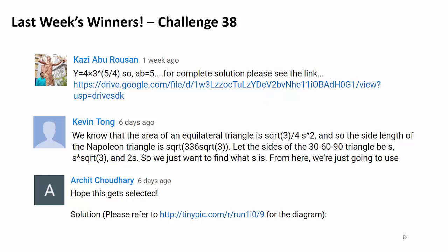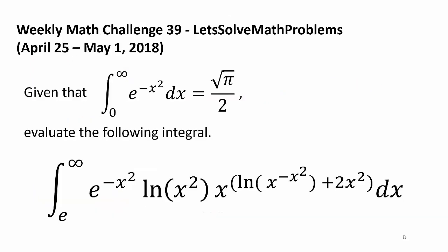Congratulations to every single one of you. Now it's time for this week's challenge. Given that integral from 0 to infinity of e to the negative x squared dx is square root of pi over 2, evaluate the following integral: Integral from e to infinity of e to the negative x squared times natural log of x squared times x to the power of natural log of x to the negative x squared plus 2x squared dx.